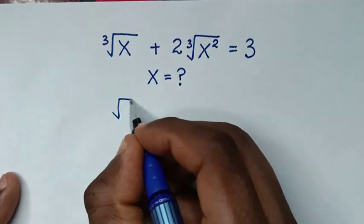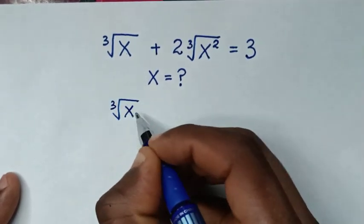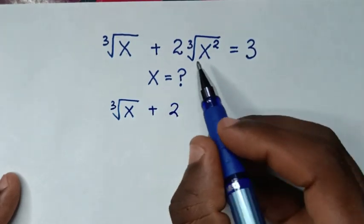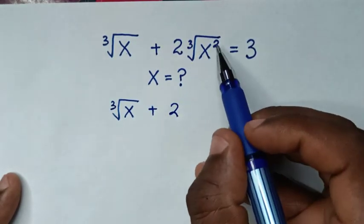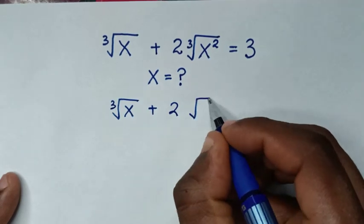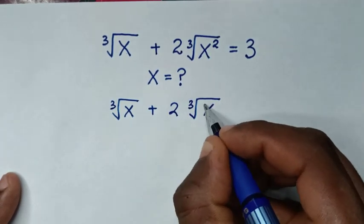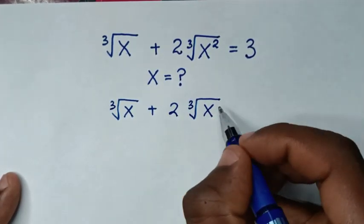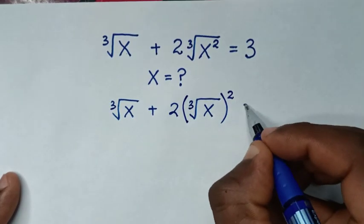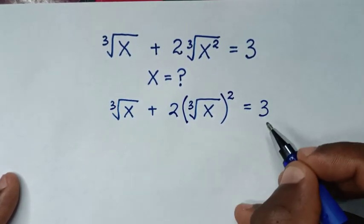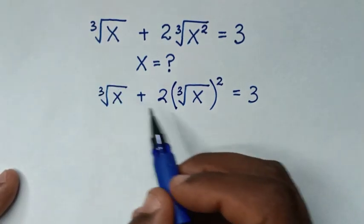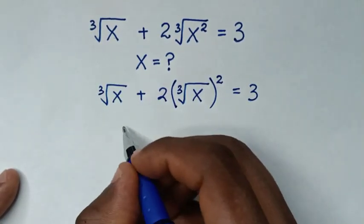From this equation we have cube root of x, then plus 2 times cube root of x squared. We'll take the square outside of the cube root, so it will be times cube root of x, with the square taken outside as a bracket. This equals 3.